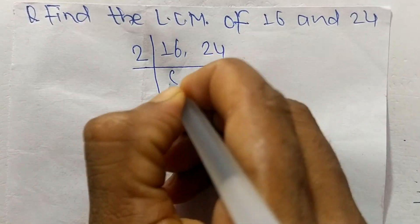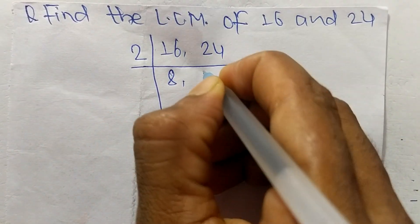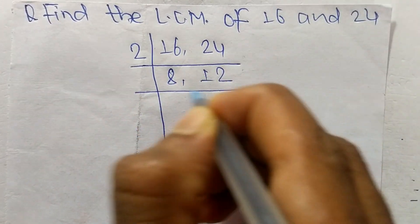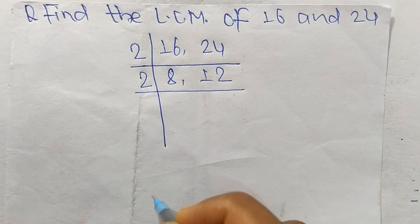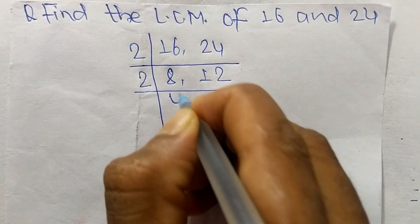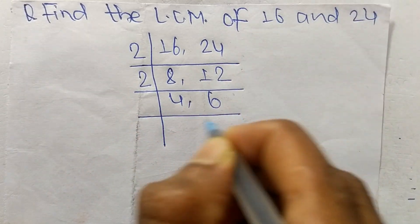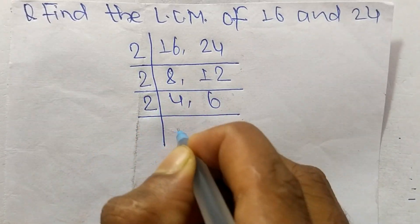2 times 8 mean 16, 2 times 12 mean 24. So again it is divisible by 2. 2 times 4 mean 8, 2 times 6 mean 12. So again it is divisible by 2.